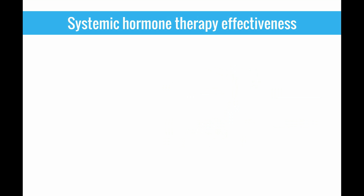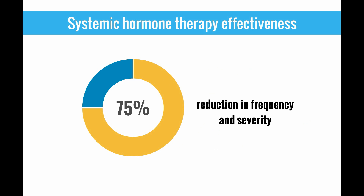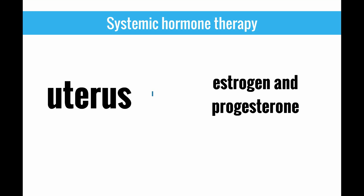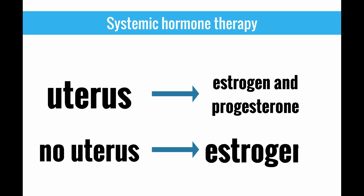The most effective treatment for hot flashes is systemic hormone therapy. On average, there is a 75 percent reduction in hot flashes both in frequency and severity. If she has a uterus, the hormone therapy needs to include both estrogen and progesterone. Estrogen alone can only be used if she does not have a uterus, as estrogen alone will increase her risk of endometrial cancer.